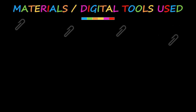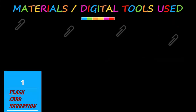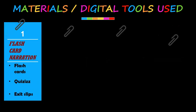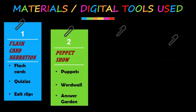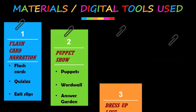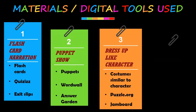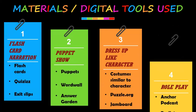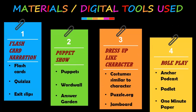The materials and digital tools used are: Station 1 — flashcards, Quizizz app, and exit slips. Station 2 — puppets, Word Wall, and Answer Garden. Station 3 — costumes similar to characters, Puzzle.org, and Jamboard. Station 4 — Anchor Podcast, Padlet, and One Minute Paper.